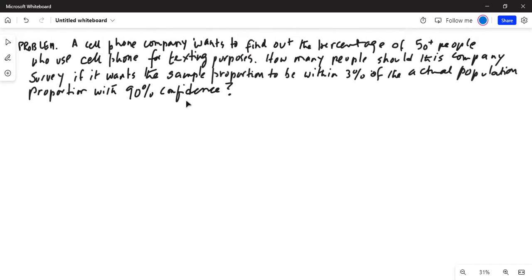A cell phone company wants to find out the percentage of 50 plus people who use cell phone for texting purposes. How many people should this company survey if it wants the sample proportion to be within 3% of the actual population proportion with 90% confidence?